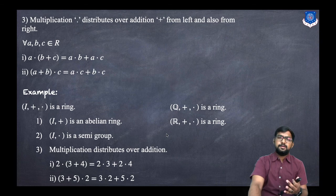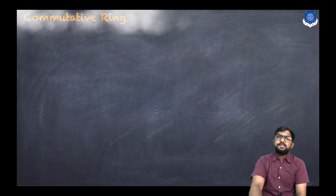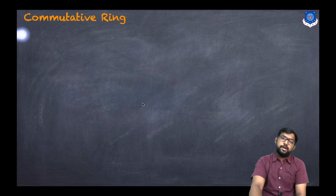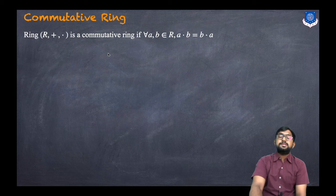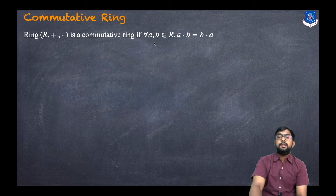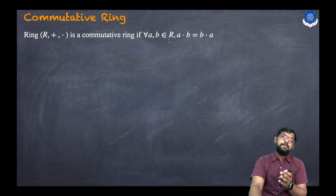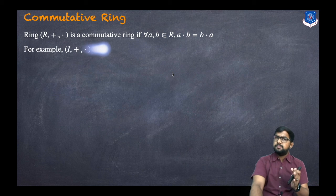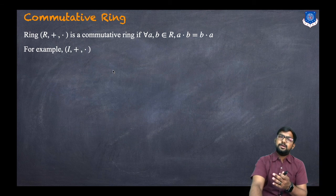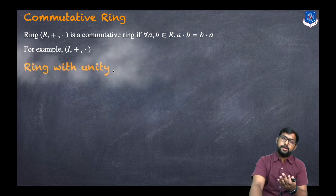Now let us discuss what is a commutative ring. The ring (R, +, ·) is said to be a commutative ring if for every A, B in R, A·B = B·A. For example, (ℤ, +, ·) is a commutative ring.